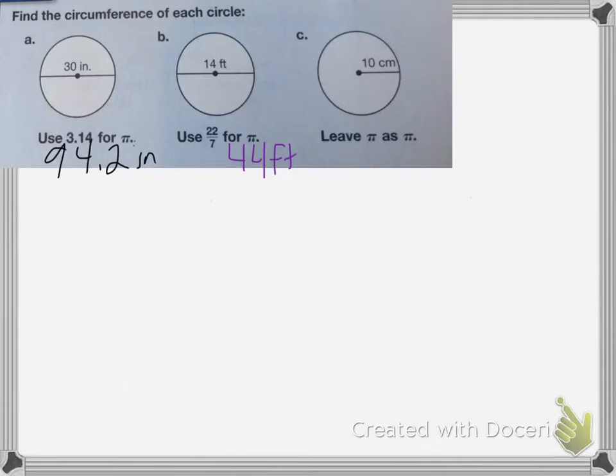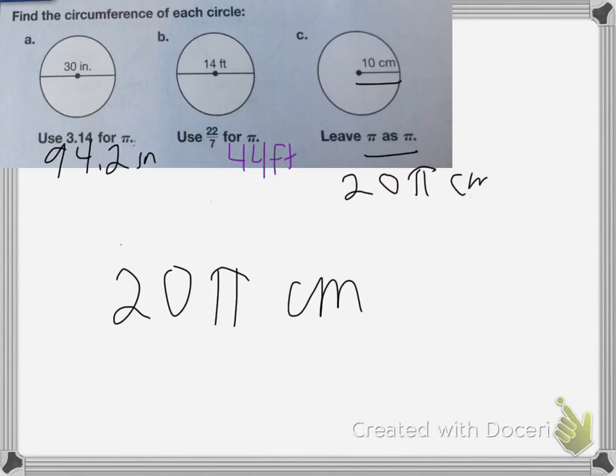Okay, on the last one, it says leave pi as pi. So what we're going to do is first find the diameter. So remember, the diameter is 10 times 2, which is 20. So my diameter is 20 centimeters. And when I leave pi as pi, I'm just going to say it's 20 pi centimeters. So all I'm doing is I'm not going to multiply by 3.14. I'm just going to leave that symbol there. Okay, so the answer would be 20 pi centimeters.